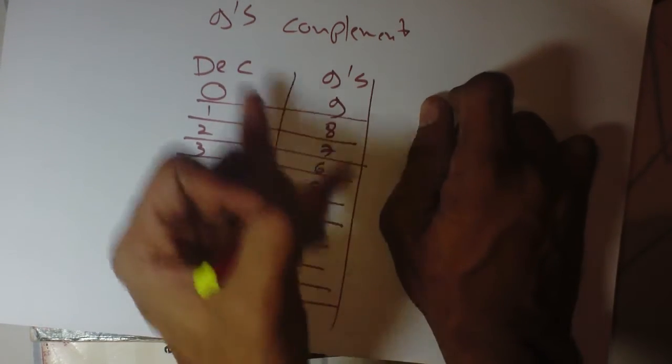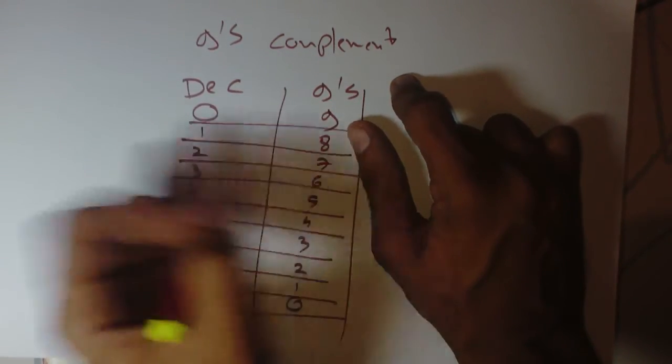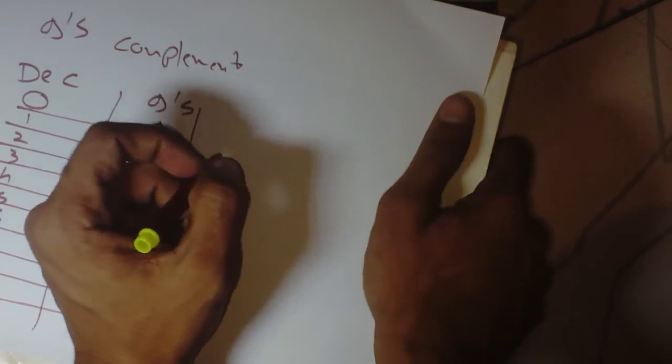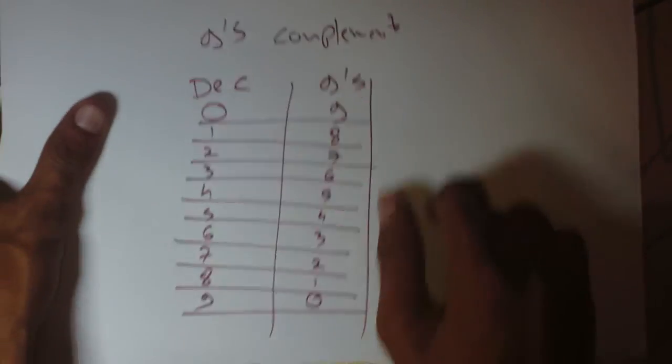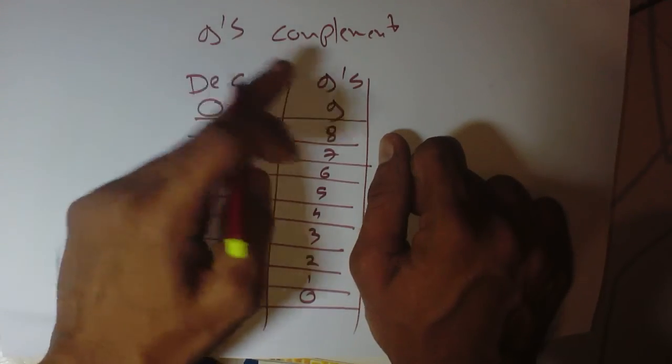So here are the 9's complement of the particular decimal numbers. So this is it. In the next tutorial we will see how to add and subtract decimal numbers using 9's complement.